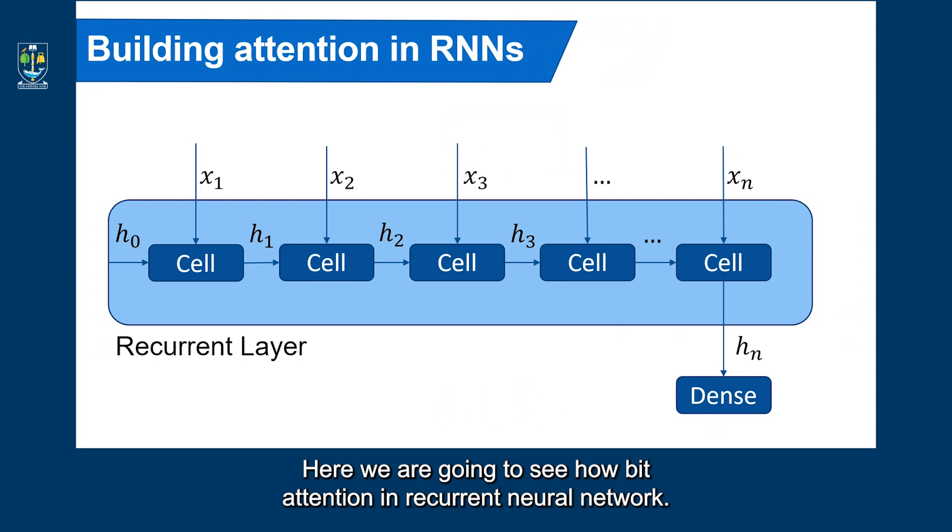Here we're going to see how we can build attention in recurrent neural networks. We see here a standard recurrent layer that we have discussed before. Based on these layers, given a sequence, for example, of previous words, we can predict the next. So here as an input,